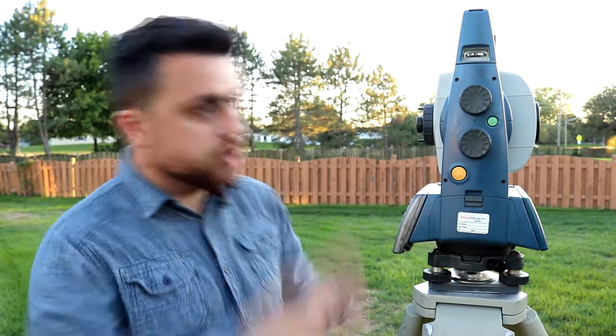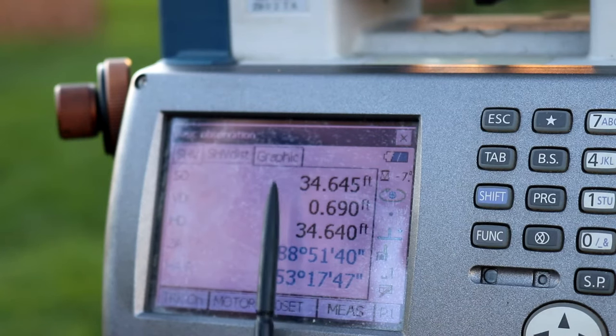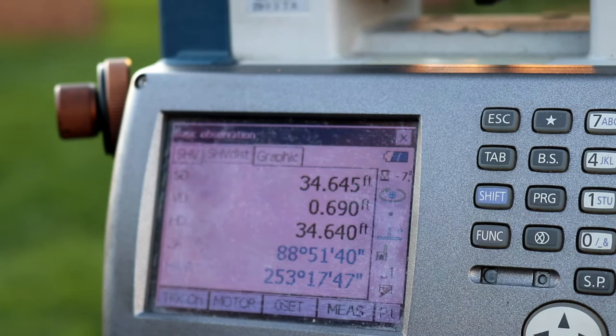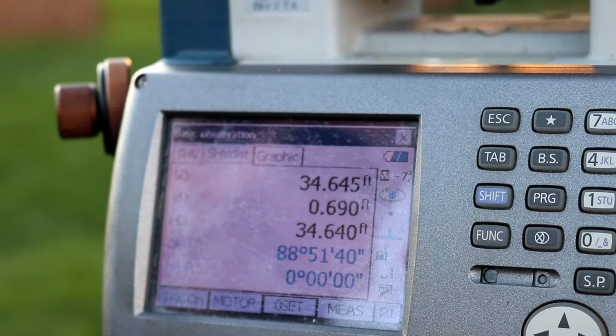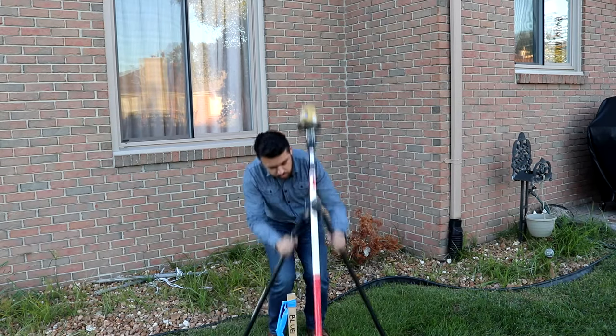Okay, we now have a reading from our unknown point to point blue. Let's take a look at what we got. So it looks like the distance from our occupation point to the rod is 34.645 feet. Because this is the first point that we're measuring, the angle is actually going to be set to zero. So let's go ahead and do that. Okay, our angle is set to zero. We have our distance. We can now record this in our field book. Let's go ahead and move to the next point.